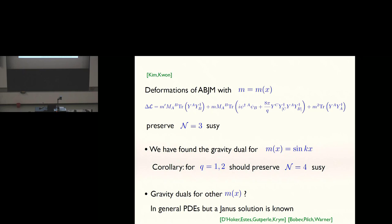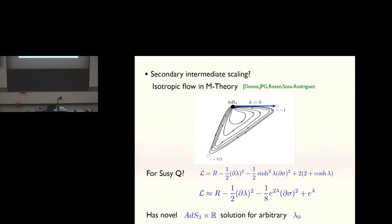We'll have a sine kX times the delta is two operator, a cos kX times the delta is one operator. What they showed is that in general these deformations of ABJM theory preserve N equals three supersymmetry for an arbitrary function of X. What the supergravity calculation shows is that if Q is one or two there'll be an enhancement of that to N equals four. What about other values of M of X? Well, in general one's going to have to solve PDEs if one wants to get at this result. But I should just mention that there is a Janus solution in this SO(4) cross SO(4) gauged supergravity which provides another example of these deformations.